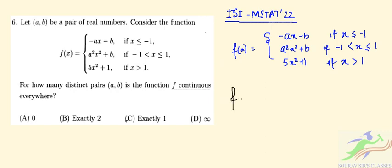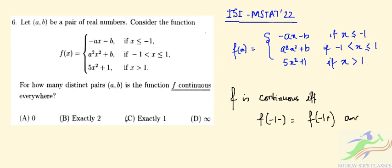F is continuous if and only if F of minus 1 from the left equals F of minus 1 from the right, and F of 1 from the right should be equal to F of 1 from the left.